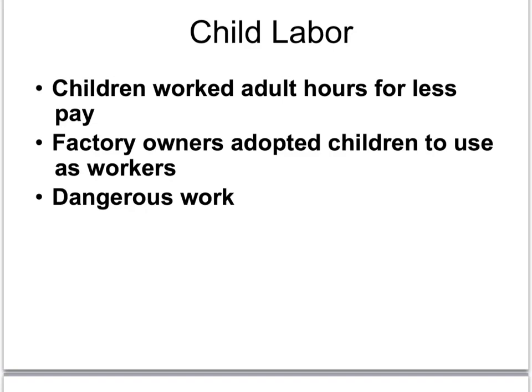Children were also expected to work in these factories. Children worked adult hours — often 10, 12, even 14 hours a day — for even less pay. They were better suited for certain jobs, like unjamming threading machines while they were still running, crawling under and reaching in to pull out excess cotton, just hoping the machine doesn't start while their hand is in there. Factory owners would also adopt orphans so they wouldn't have to pay them at all. Child labor laws didn't even exist yet.